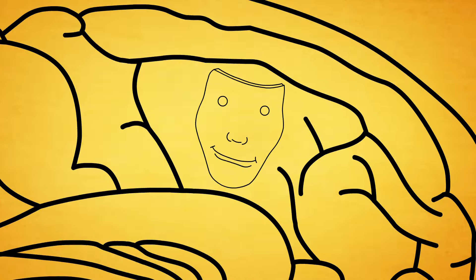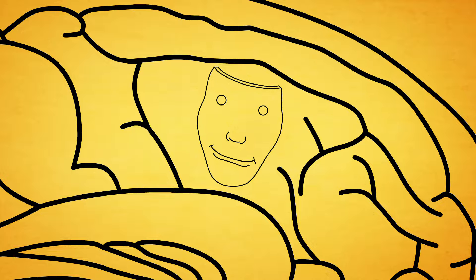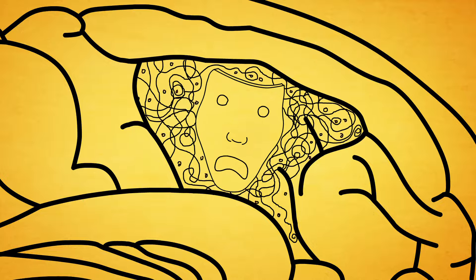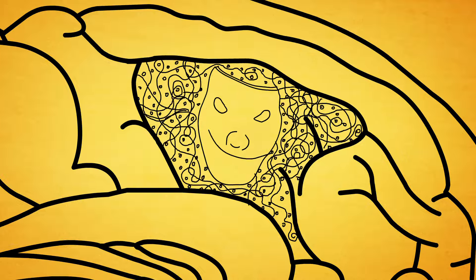Next, the plaques and tangles invade the part of the brain where emotions are regulated. When this happens, the patient gradually loses control over moods and feelings.